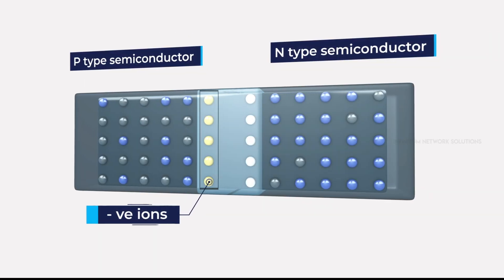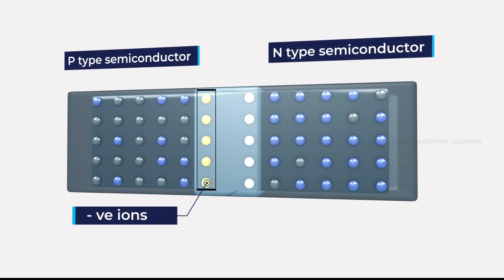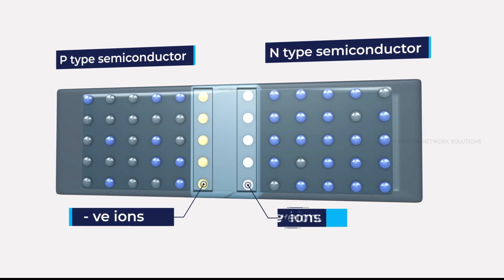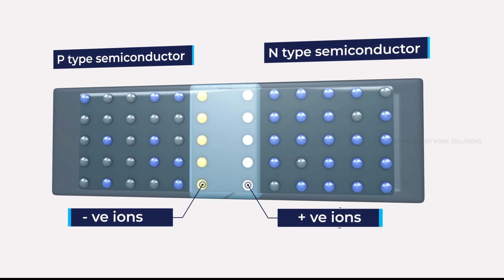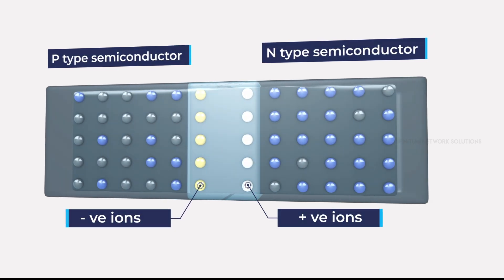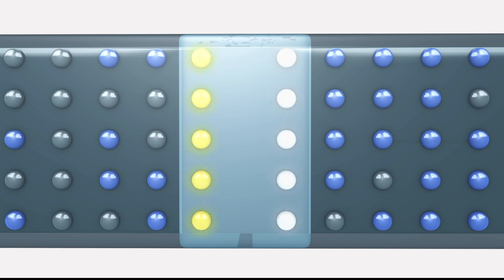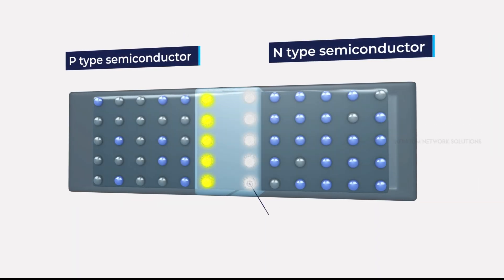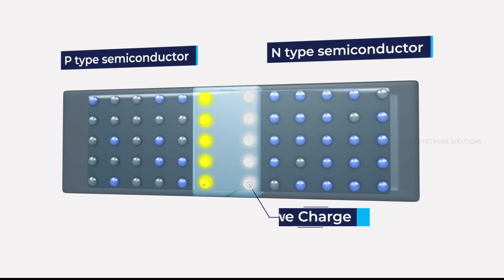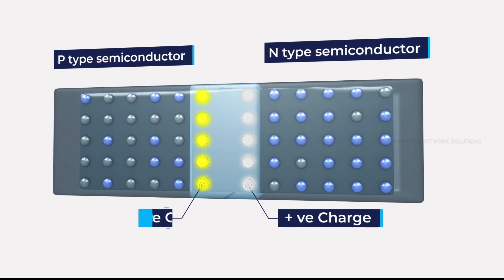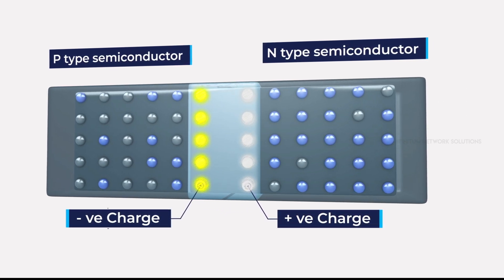Therefore, in the region close to the junction, only negative ions are left behind on the P-side, and only positive ions on the N-side. This results in the formation of a narrow charged region on either side of the PN junction. The N-type semiconductor close to the junction becomes positively charged, and the P-type semiconductor close to the junction becomes negatively charged.